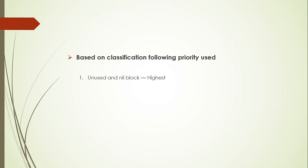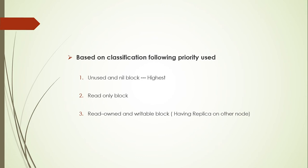Based on these states, replacement priority is assigned as follows: unused and nil blocks have the highest priority; second is read-only; third is read-own; and fourth is writeable blocks, which have a replica copy of that node's data on another node. The block with a single copy on that node has the lowest priority.